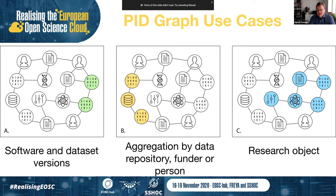The third general use case is what I call a research object — a fairly well-established concept. Nowadays a publication in the form of a PDF is not really the whole thing; that's just the text describing what was done. What you really want to know is: what are the underlying data, what are the software tools, who are the people involved, what was the funding, etc. A research object is the aggregation of all these connected things. This is what PID graph is about.